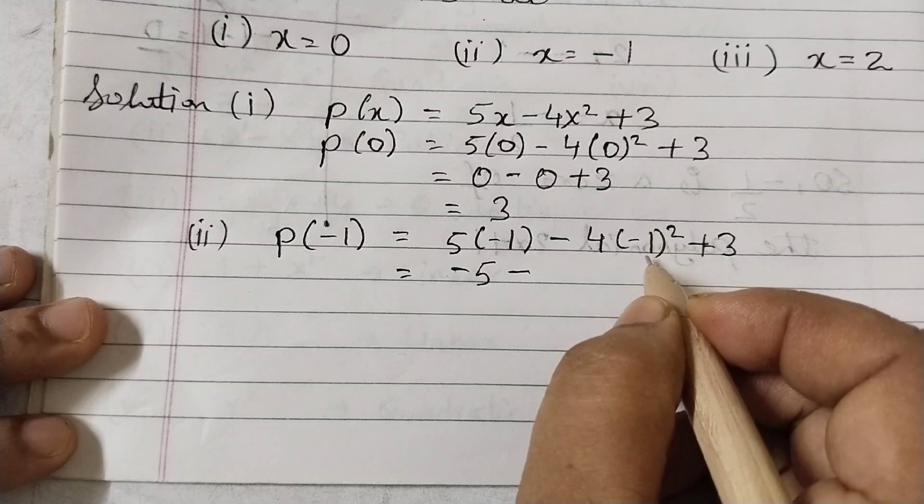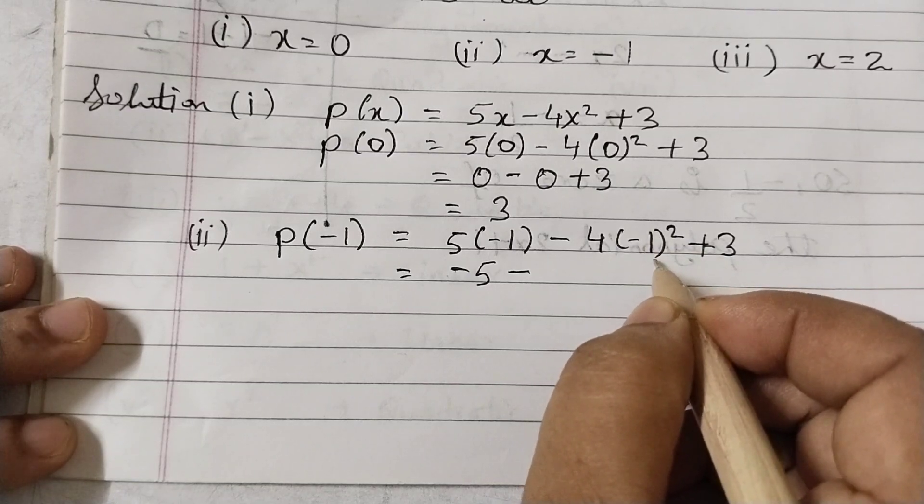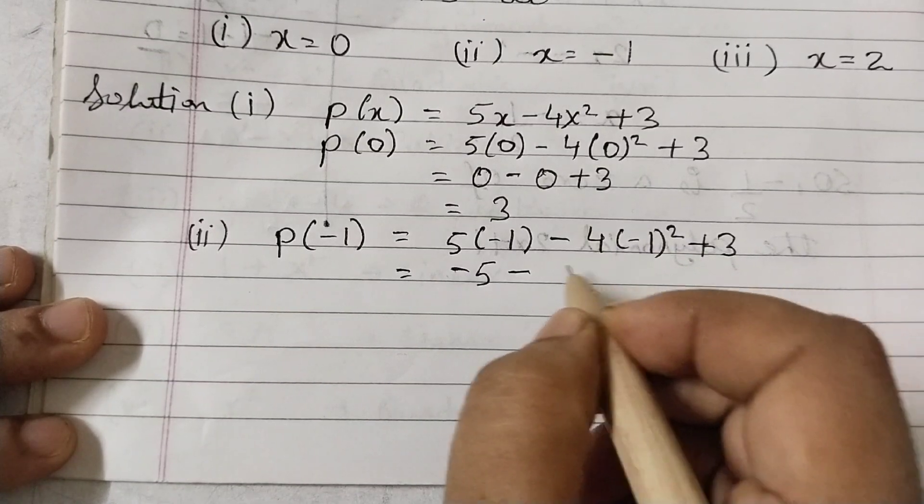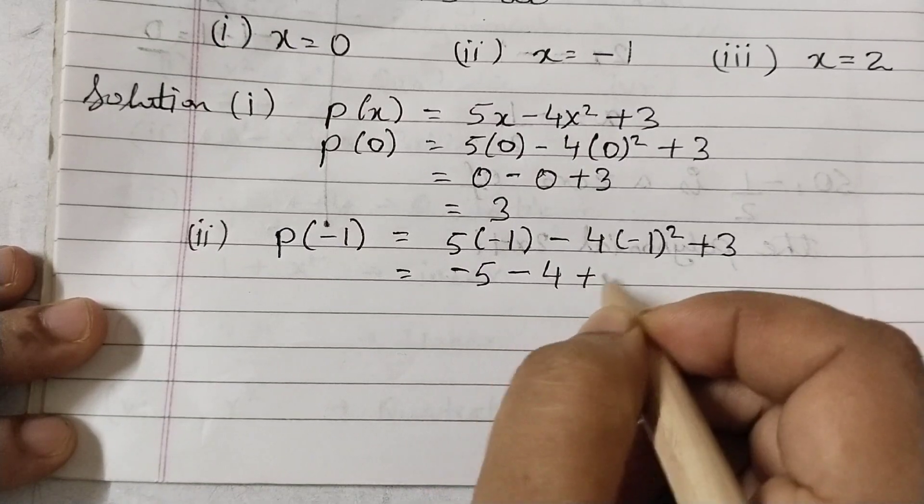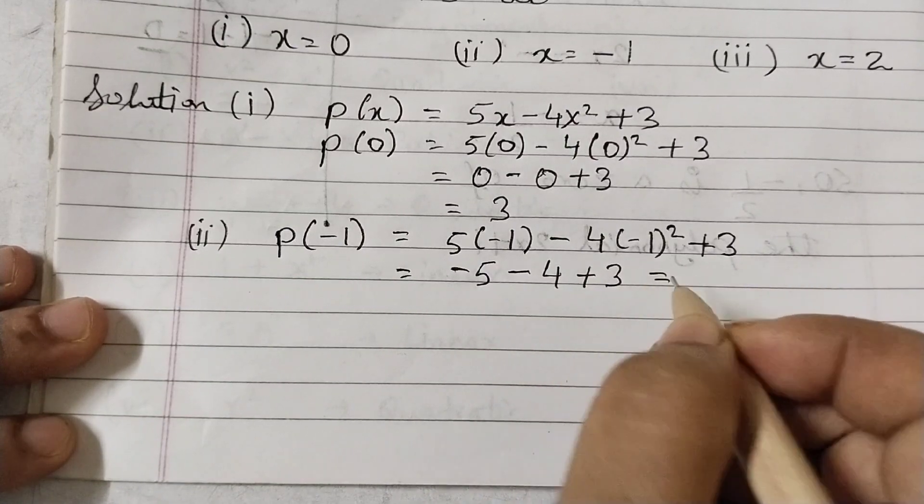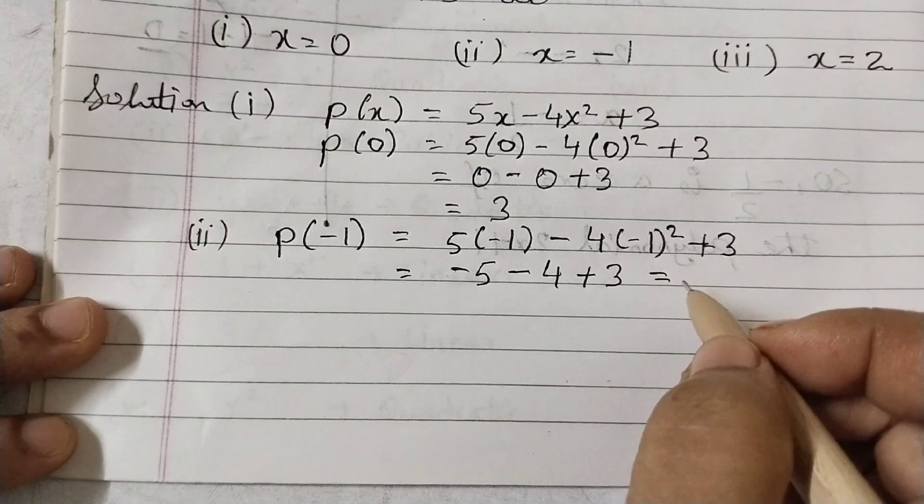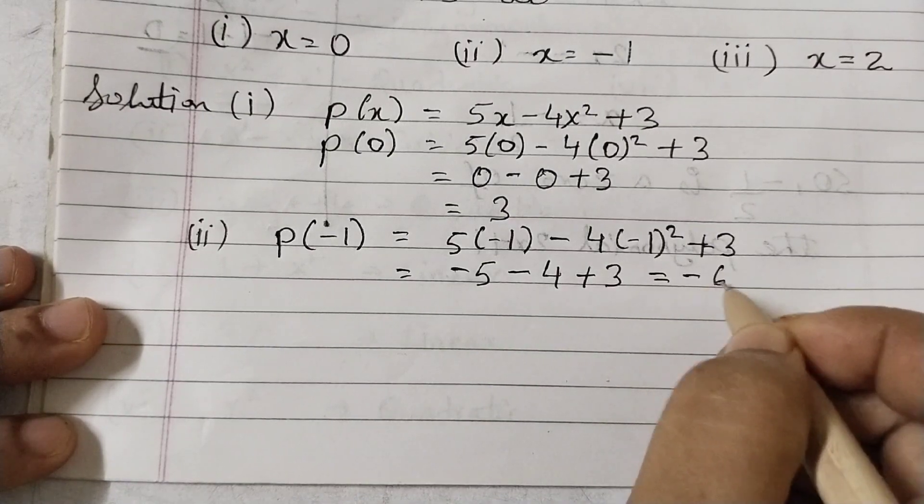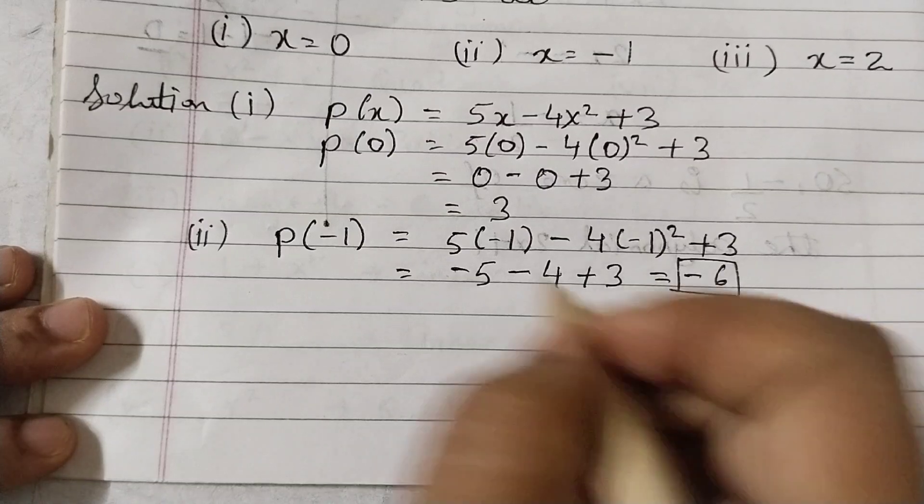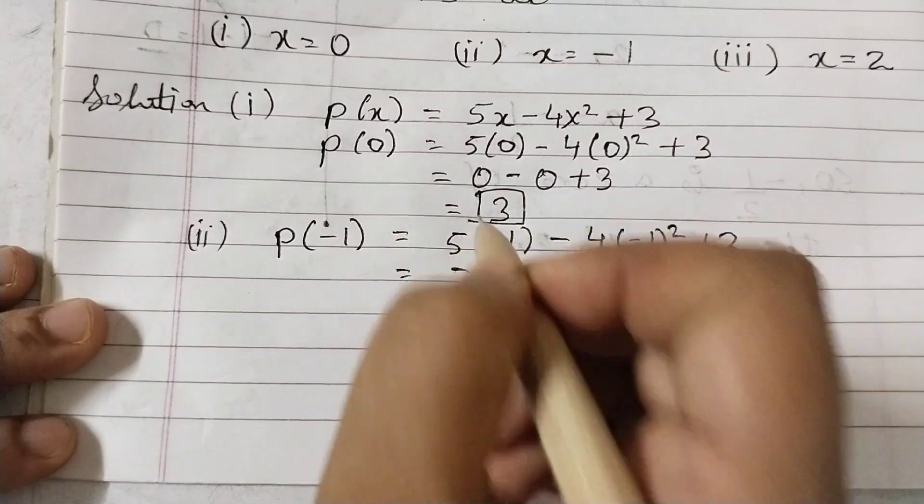Minus 1 into minus 1 is 1, so that multiplied by 4 is 4 plus 3. So that would be equal to minus 5 minus 4 is minus 9 plus 3 is minus 6. So this is for the second one, this is for the first one.